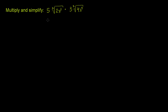The two things that pop out here are that we can change the order a little bit, because the commutative property allows us to switch the order for multiplication. So we can multiply the 5 times the 3. The other two things we're multiplying are both cube roots, which is the same as taking something to the 1/3 power. So let's switch the order and rewrite these cube roots as raising to the 1/3 power.